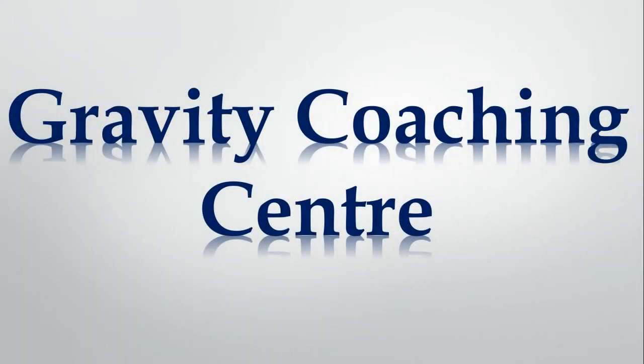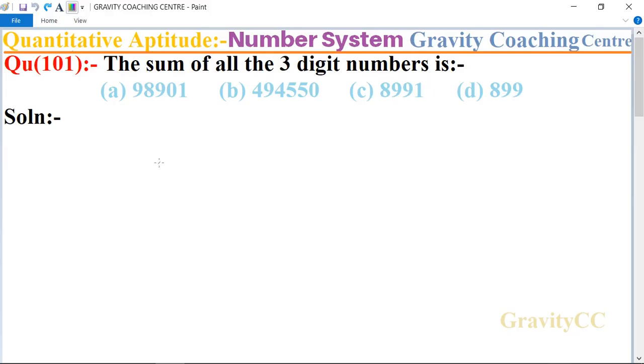Welcome to our channel Gravity Coaching Center. Quantitative Aptitude, Chapter Number System, Question Number 101: The sum of all the three-digit numbers is? The three-digit numbers begin from 100, so 100 plus 101 plus 102 plus